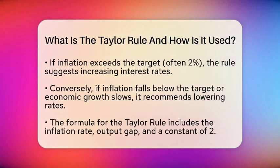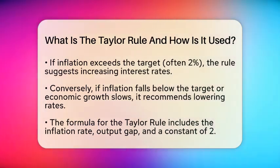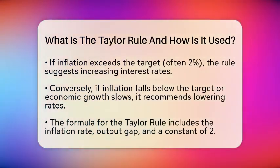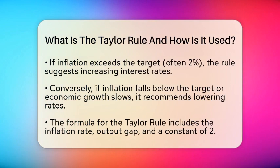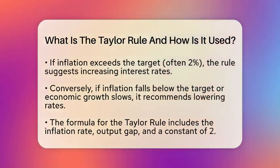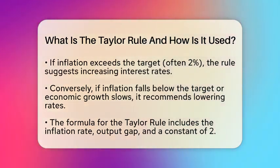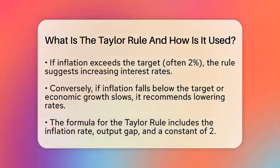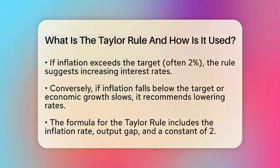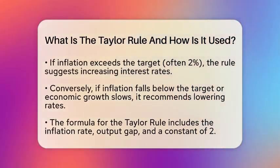In this equation, the recommended policy rate is represented by the letter R, the inflation rate by the letter P, and the output gap — which is the difference between actual gross domestic product and potential gross domestic product — is represented by the letter Y.